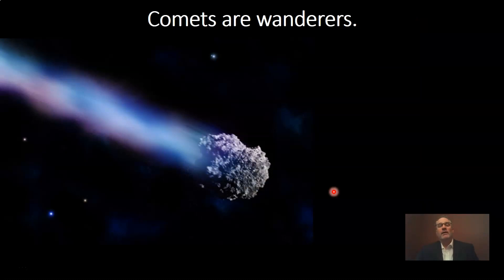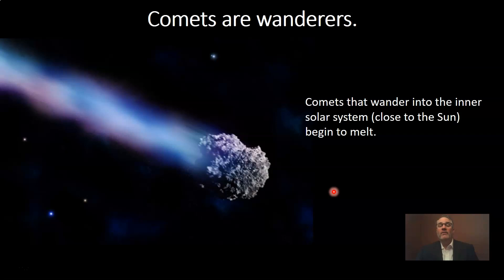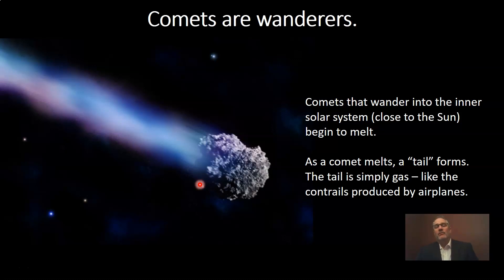Comets are sometimes called wanderers. They like to mostly stay in that outer solar system cloud, but sometimes they wander into the inner solar system — they get bumped by another comet and get pushed into the inner solar system. When they do, they get closer to the Sun and begin to melt. The loose collection of ice, rock, and dust begins to melt and it actually forms what's called a comet tail. Comets actually have two tails, and that tail is a little bit like the contrails we see produced by an airplane flying through our atmosphere.